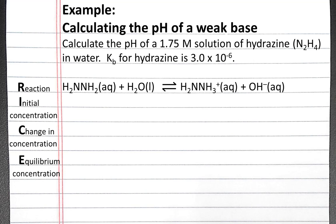So our reaction will be hydrazine plus water produces hydrazonium and hydroxide. To fill in the initial concentration row, we'll start with 1.75 molar hydrazine.